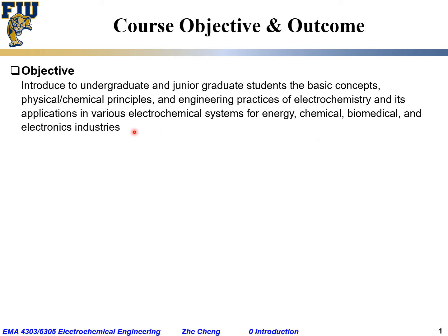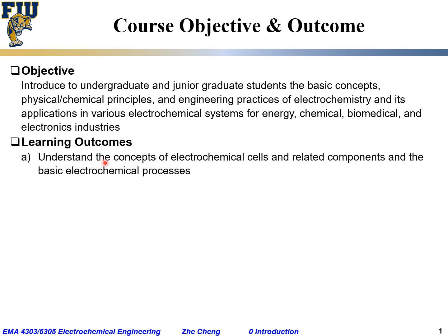For the electronics industry, for example, electro-deposition of copper for metallization relies on electrochemistry. All these are based on the content covered in this class. As for learning outcomes, we want students to gain understanding about electrochemical cells and related components such as cathode, anode, and electrolyte, as well as the basic electrochemical processes like galvanic cells and electrolytic cells.